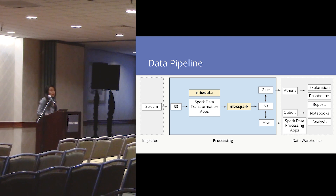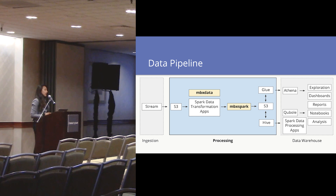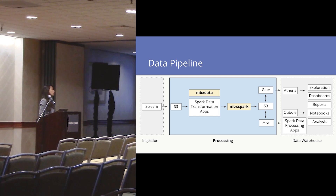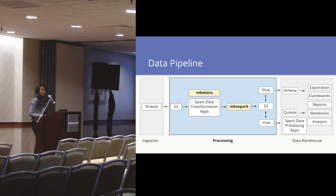If you're wondering why we have two metastores, it's because of the diverse use cases I mentioned. We have analysts who love Athena — Athena's great for writing SQL queries — so we need Glue, which backs Athena. And then we also have Hive, which powers the Spark applications that people are writing at Mapbox and are part of the data pipelines we have. This is basically what the processing part of our data pipeline looks like.